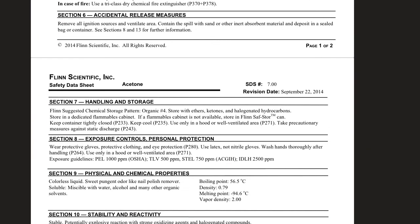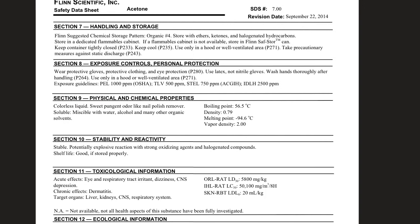Section seven: handling and storage. It tells you how to handle it and where to store it — it needs to be stored with other ethers and ketones, kept tightly closed, kept cool, in a well-ventilated area, and away from anything that could cause static discharge. Section eight: exposure controls and personal protection. Wear protective gloves, clothing, and eye protection. Use latex — not nitrile — gloves, because acetone will dissolve nitrile gloves. Wash your hands thoroughly and use it in a vent hood.